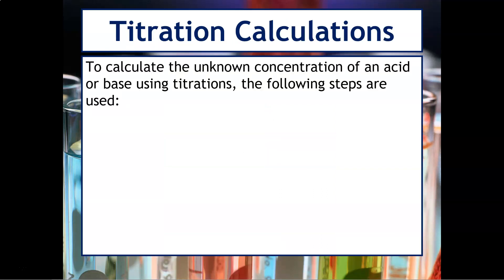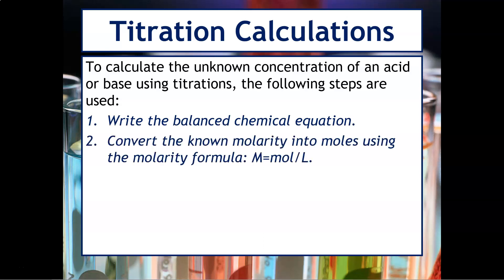To calculate the unknown concentration of an acid or base using a titration, we need to use the following steps. First, as always, you have to write the balanced equation. Second, you have to convert the known molarity into the amount of moles using the molarity formula. Molarity equals moles over liters. You'll then convert the moles of known into the moles of unknown using the mole ratio. So notice it's similar to our stoichiometry unit.